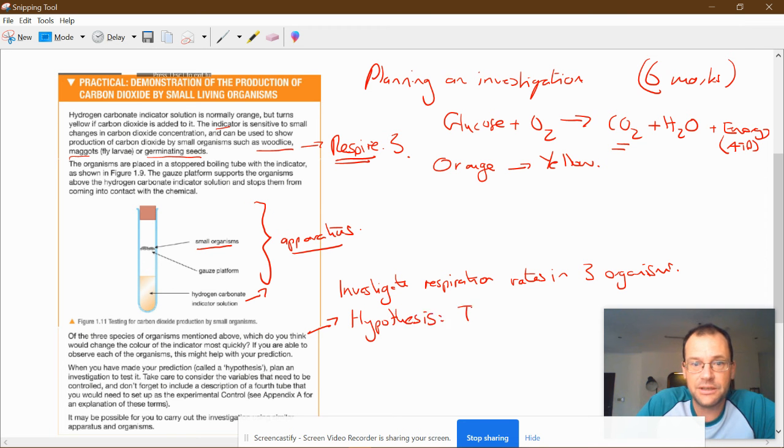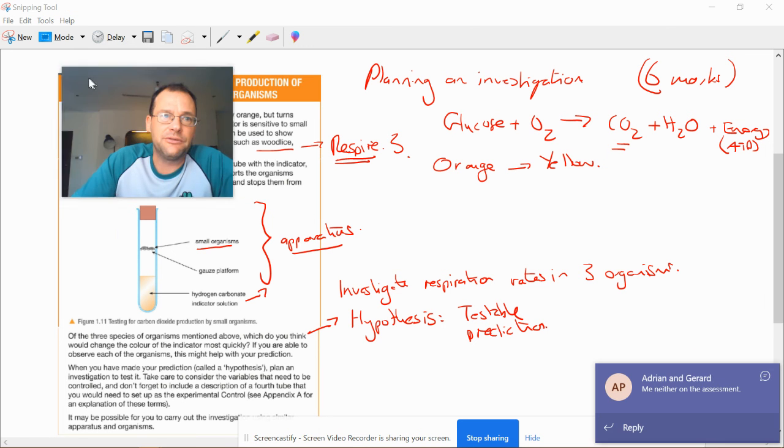You could make from this a hypothesis. What is a hypothesis? It's a testable prediction. We can test it because we can do this experiment on it. So our prediction might be actually wood lice are going to be respiring quicker because they're more active, they're moving more, they're displaying more of those life processes more frequently, and they're bigger organisms generally. So that might be your hypothesis.